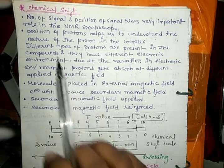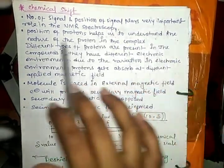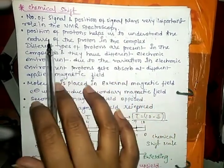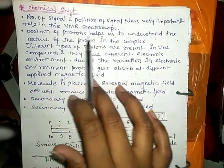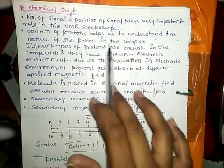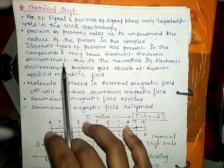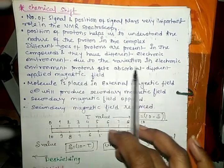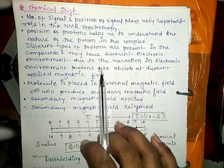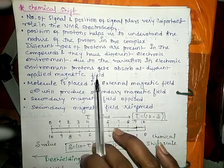Next we see chemical shift. The chemical shift, number of signals, and position of signal play very important role in NMR spectroscopy. Position of proton helps us understand the nature of proton in the complex. Different types of protons are present in compounds and they have different electronic environments.